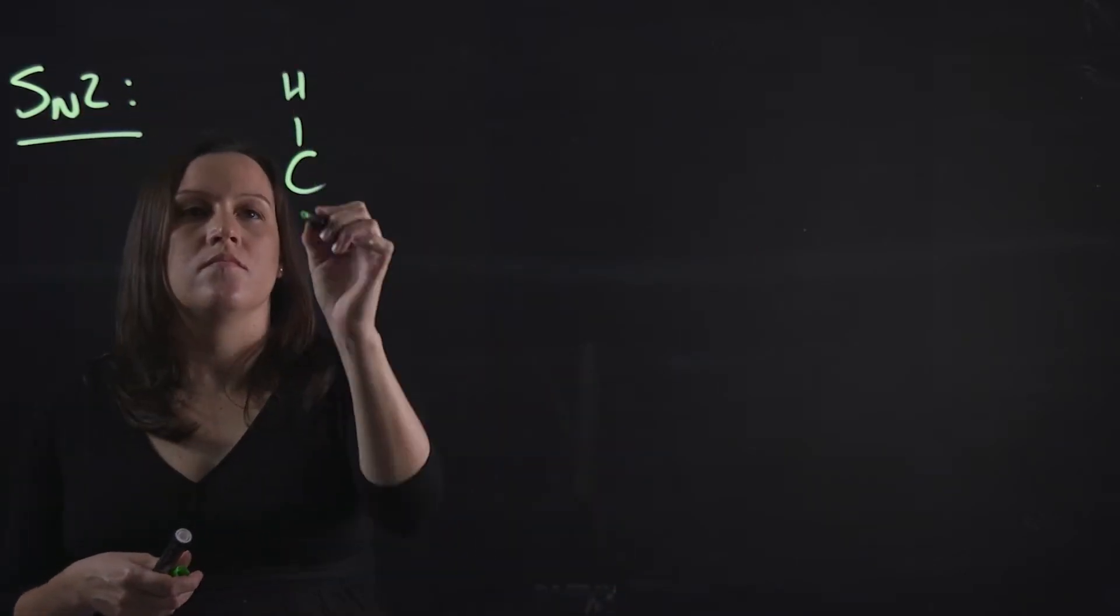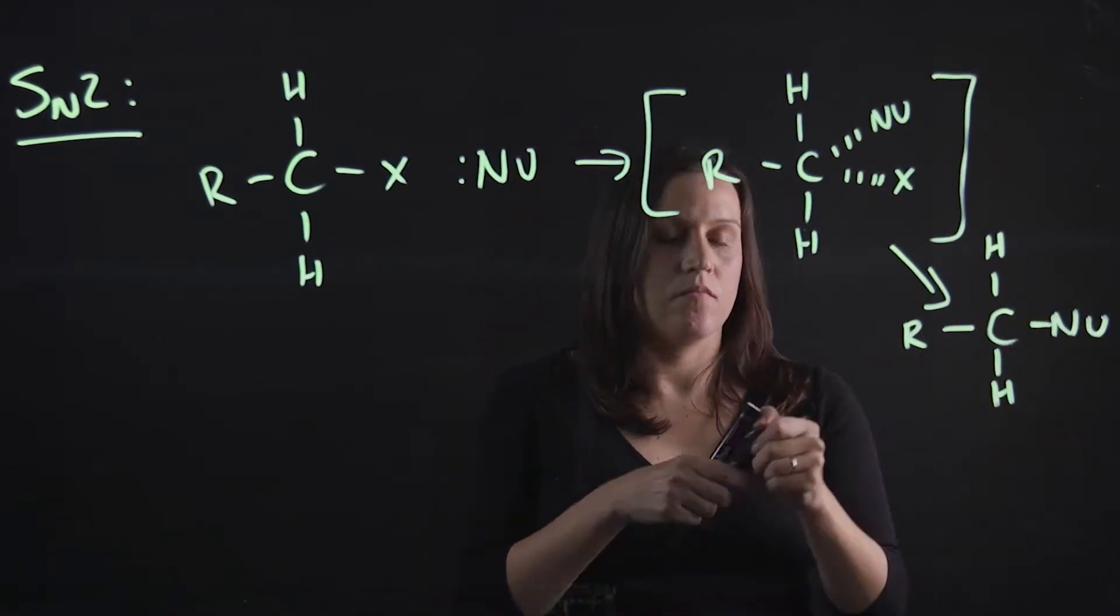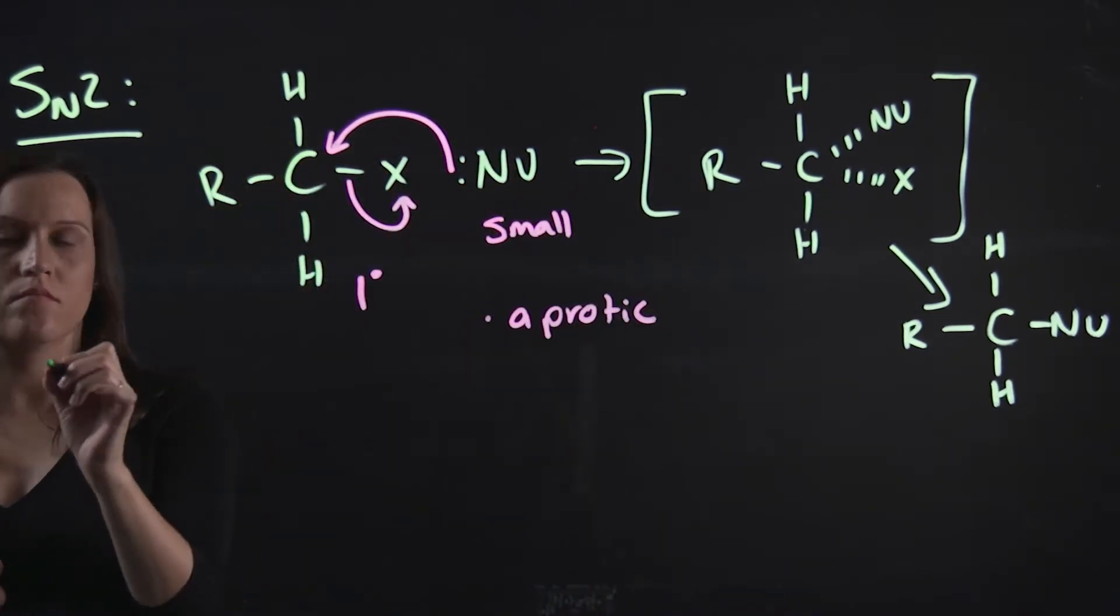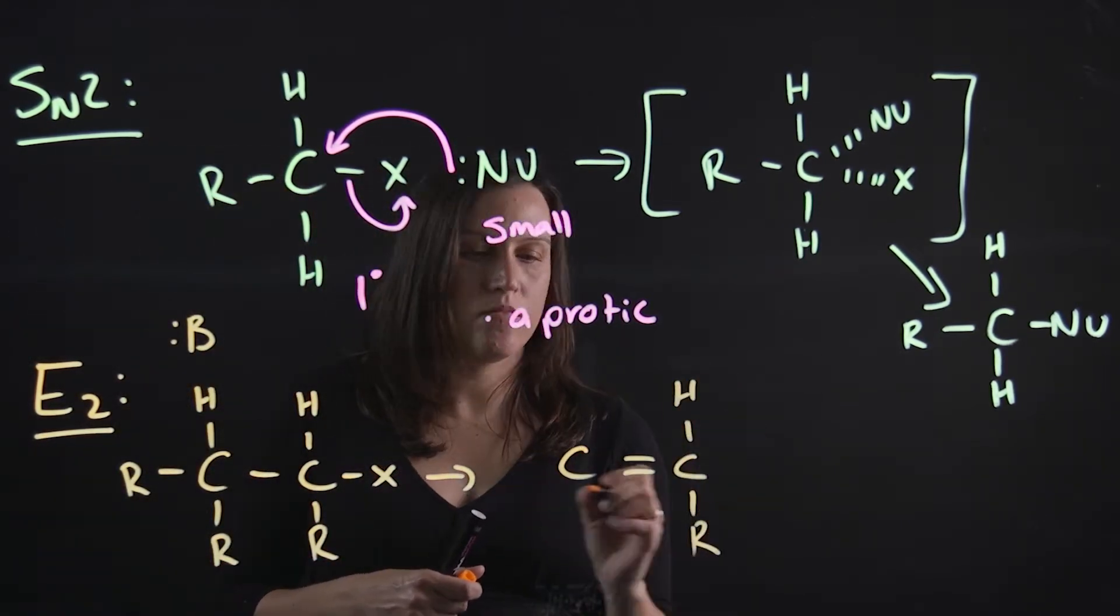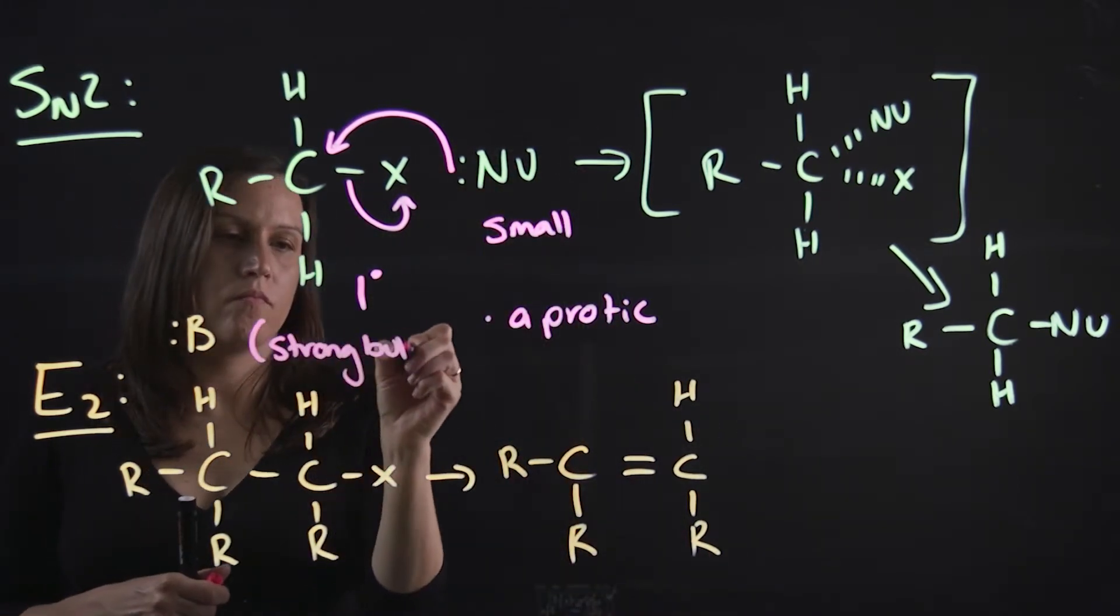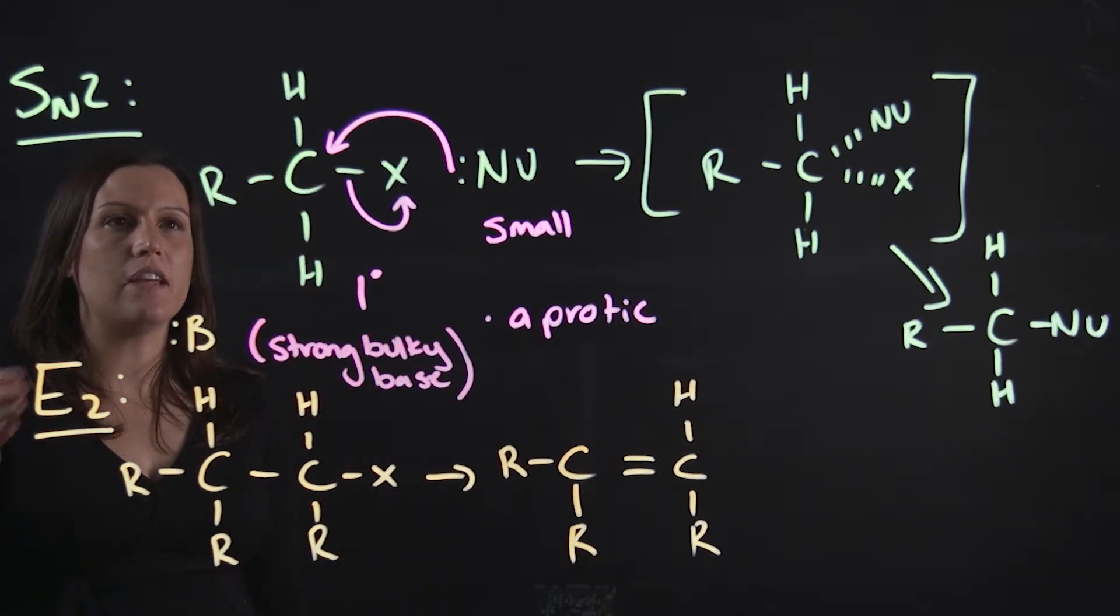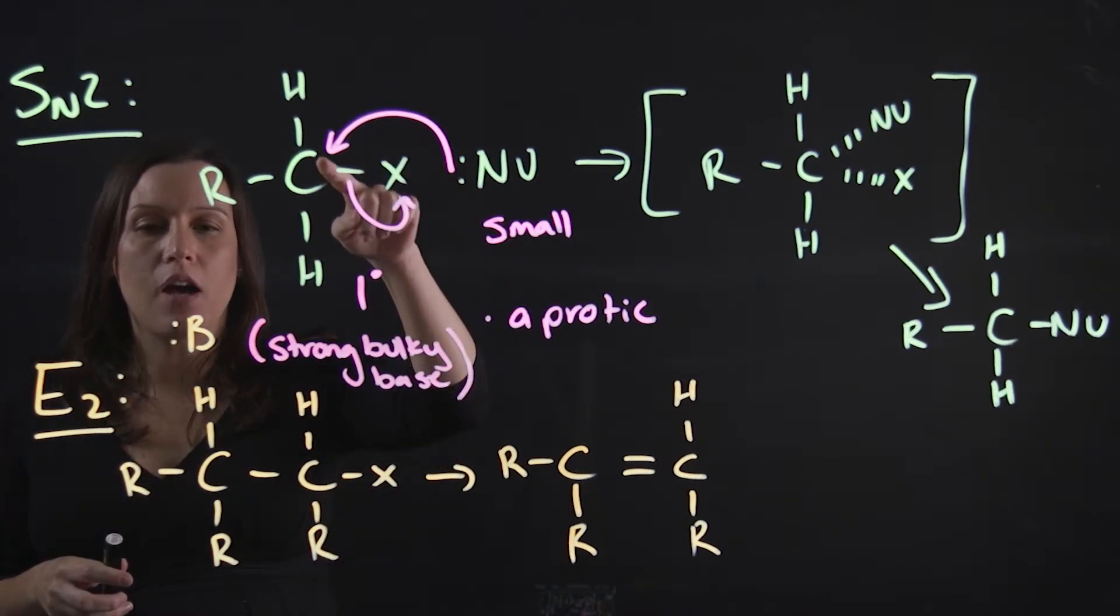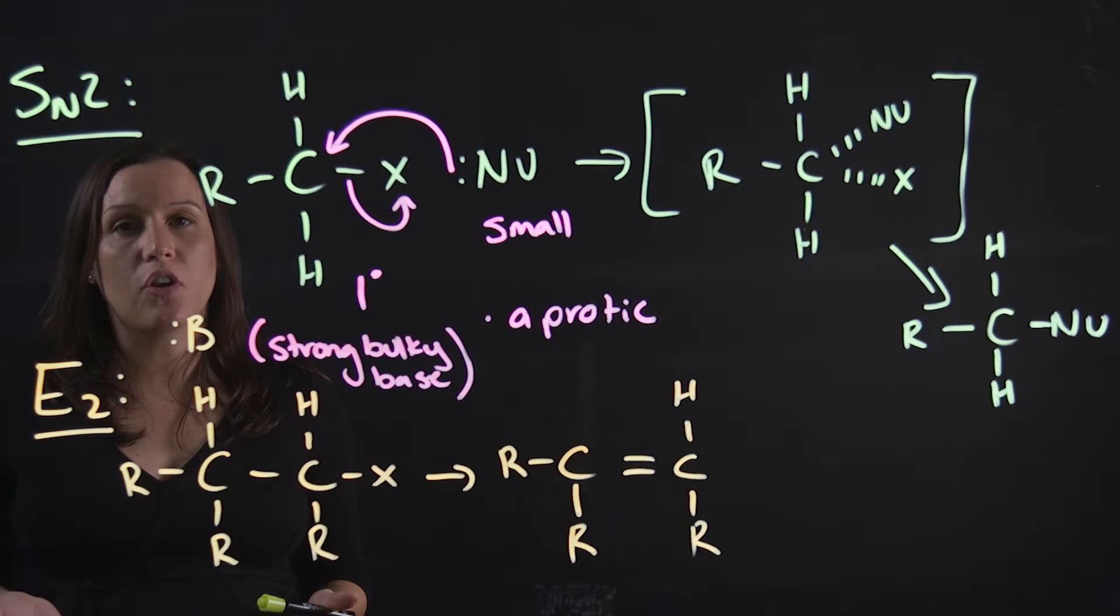So let's talk about SN2 and E2. We have a small nucleophile that comes in and attacks the alpha carbon. We have a leaving group. This alpha carbon needs to be a primary one for this reaction to occur really fast.